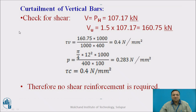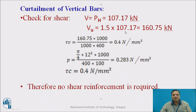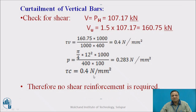Curtailment of vertical bars — now a check for shear. The shear force is pH itself, equal to 107.17 kilo Newton. The ultimate factored shear VU is 1.5 times V, giving 160.75 kilo Newton. The shear stress tau V works out to 0.4 N per mm squared. The percentage steel provided gives a tau C of 0.4 N per mm squared from table 19 of IS456.